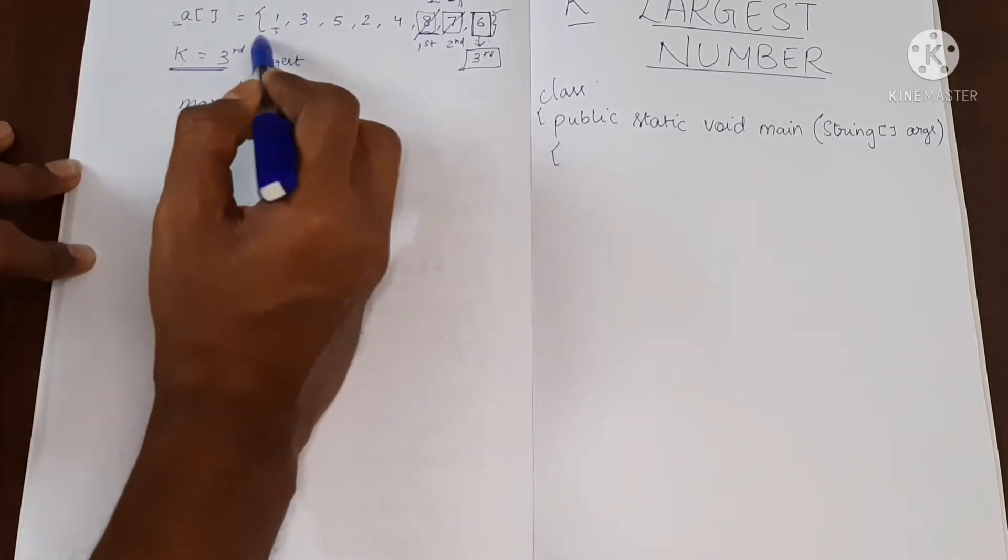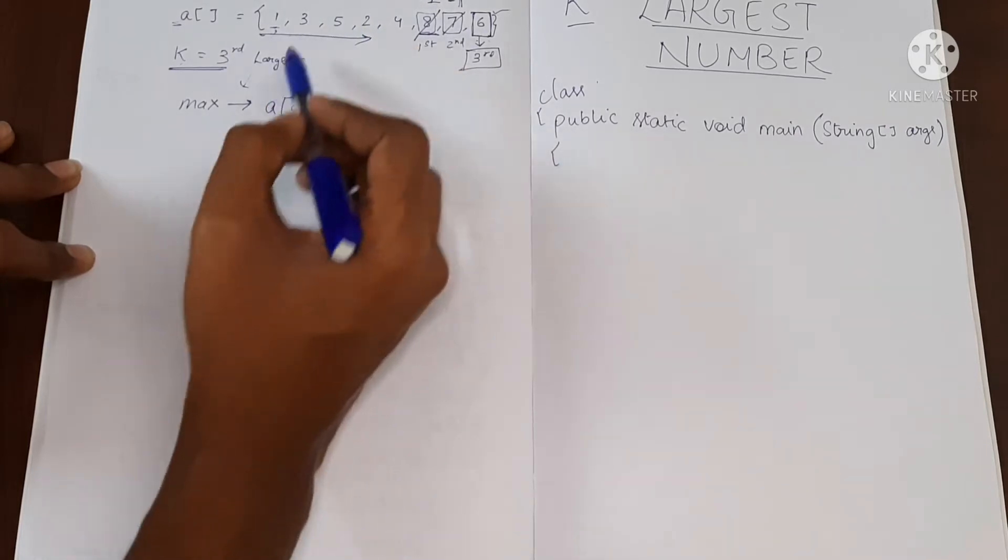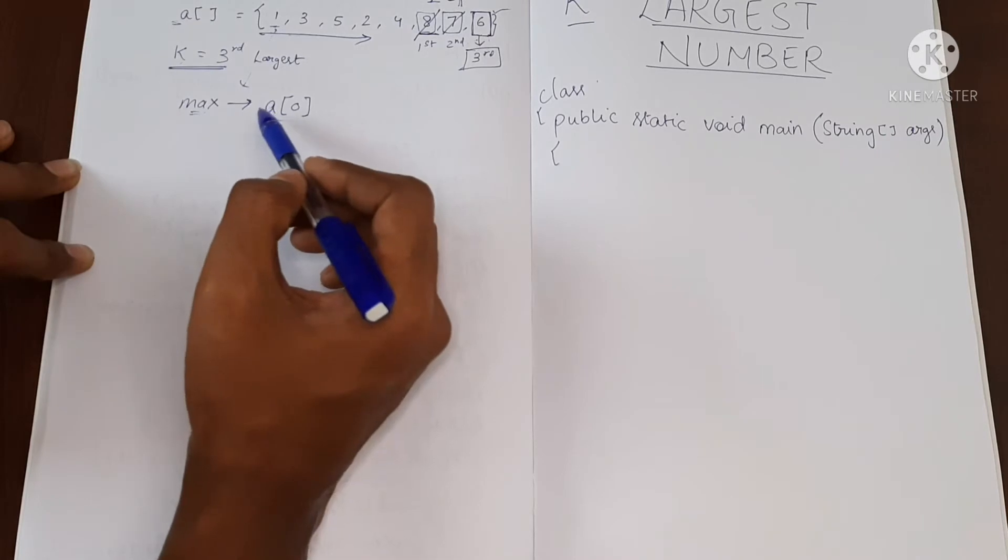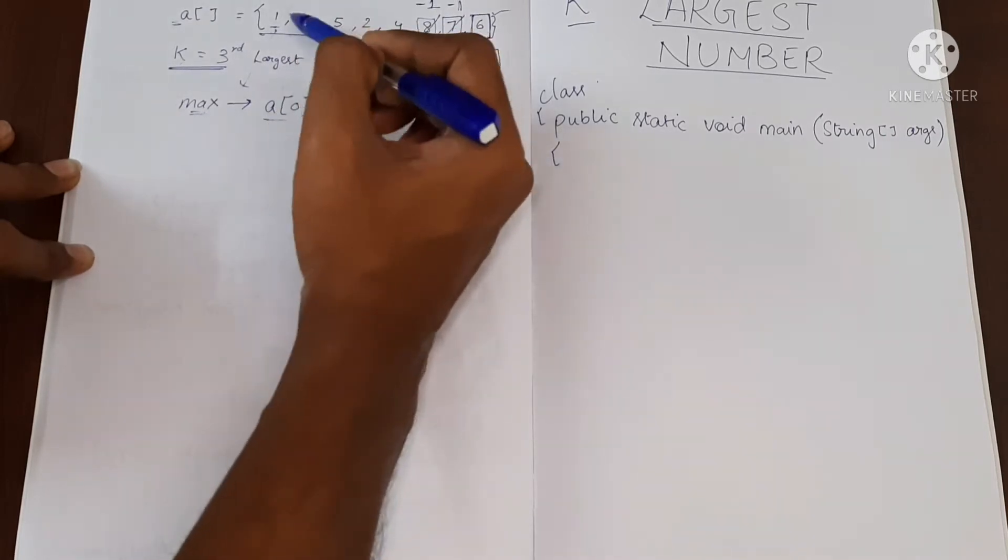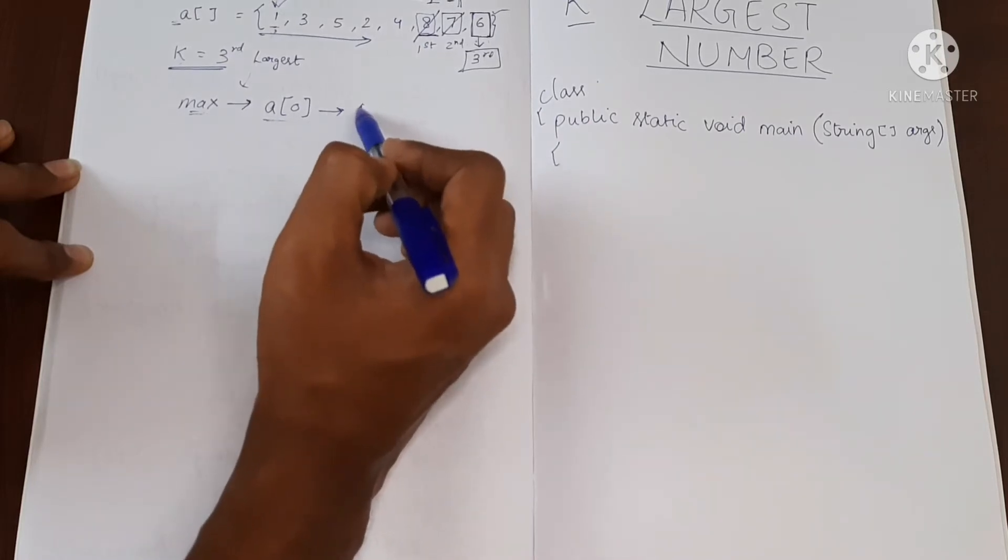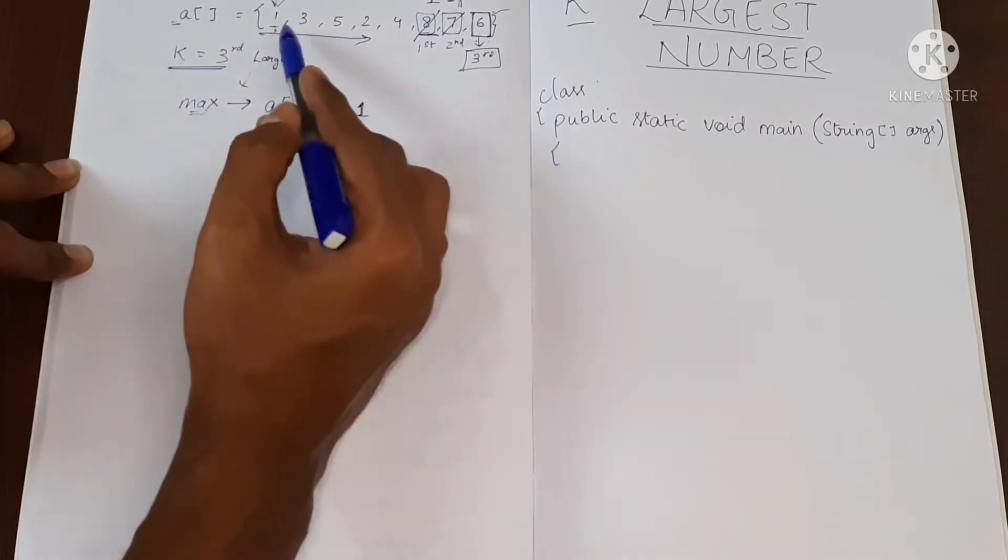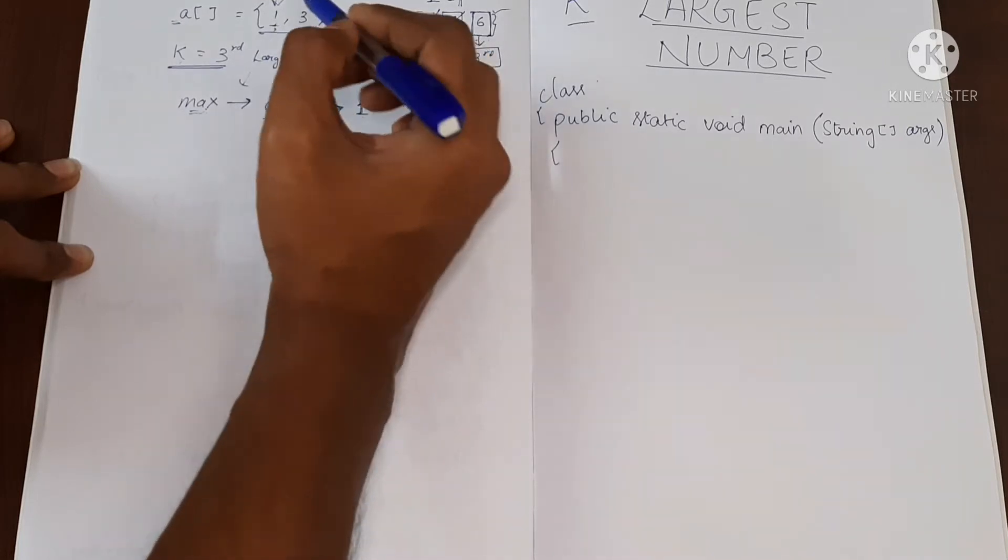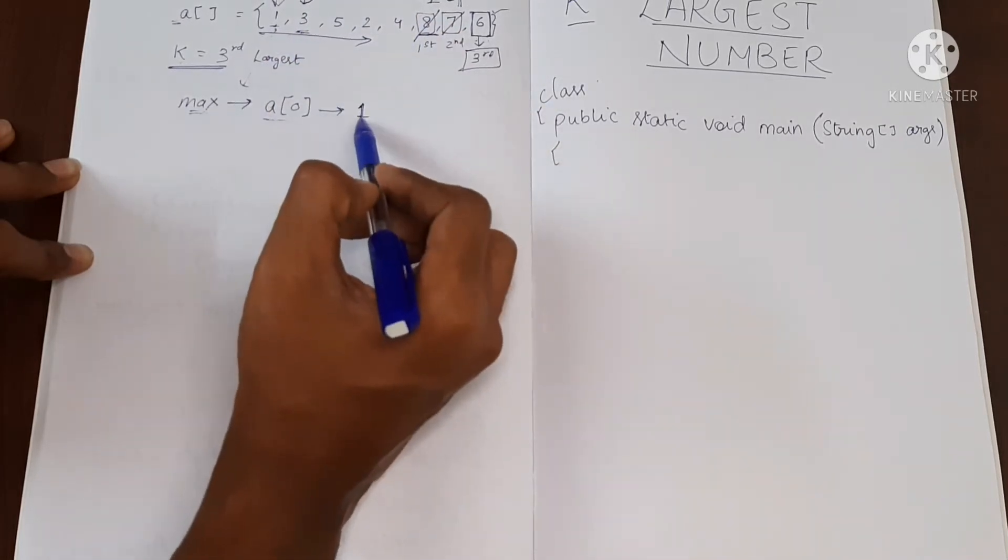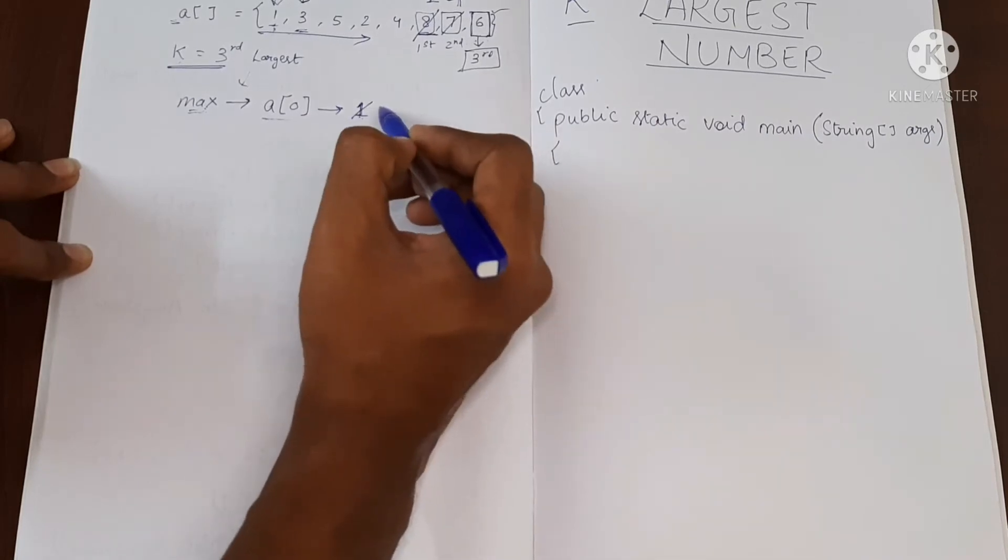And then while I traverse through this array, whenever I find some value which is greater than max, I'm going to update max. So we go here and see now a of 0 is nothing but 1. So max has 1 and here also it is 1, so I'll do nothing. I'll go to the next element. Now I find 3 here. 3 is greater than 1, so I'll modify it and make it 3.